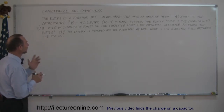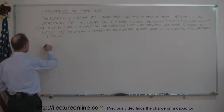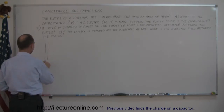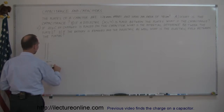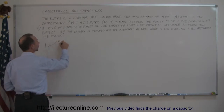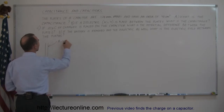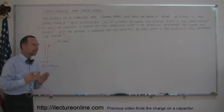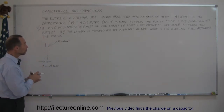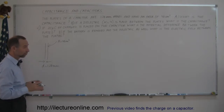First, they give us a capacitor, so let's draw it. They tell us that the distance between the plates, D, is equal to 1.28 millimeters. And they tell us that the area of the plates, A, is equal to 48 centimeters squared. Since they give us the physical dimensions, we have an equation to figure out the capacitance.